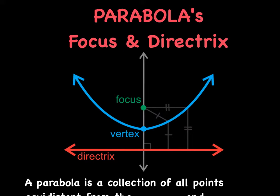The key here is you should be able to pick any point on this parabola, such as this rascal right here. Let's go ahead and mark him. What you'll see is that the distance from the focus to that random point is equal to the distance from that point to the directrix.